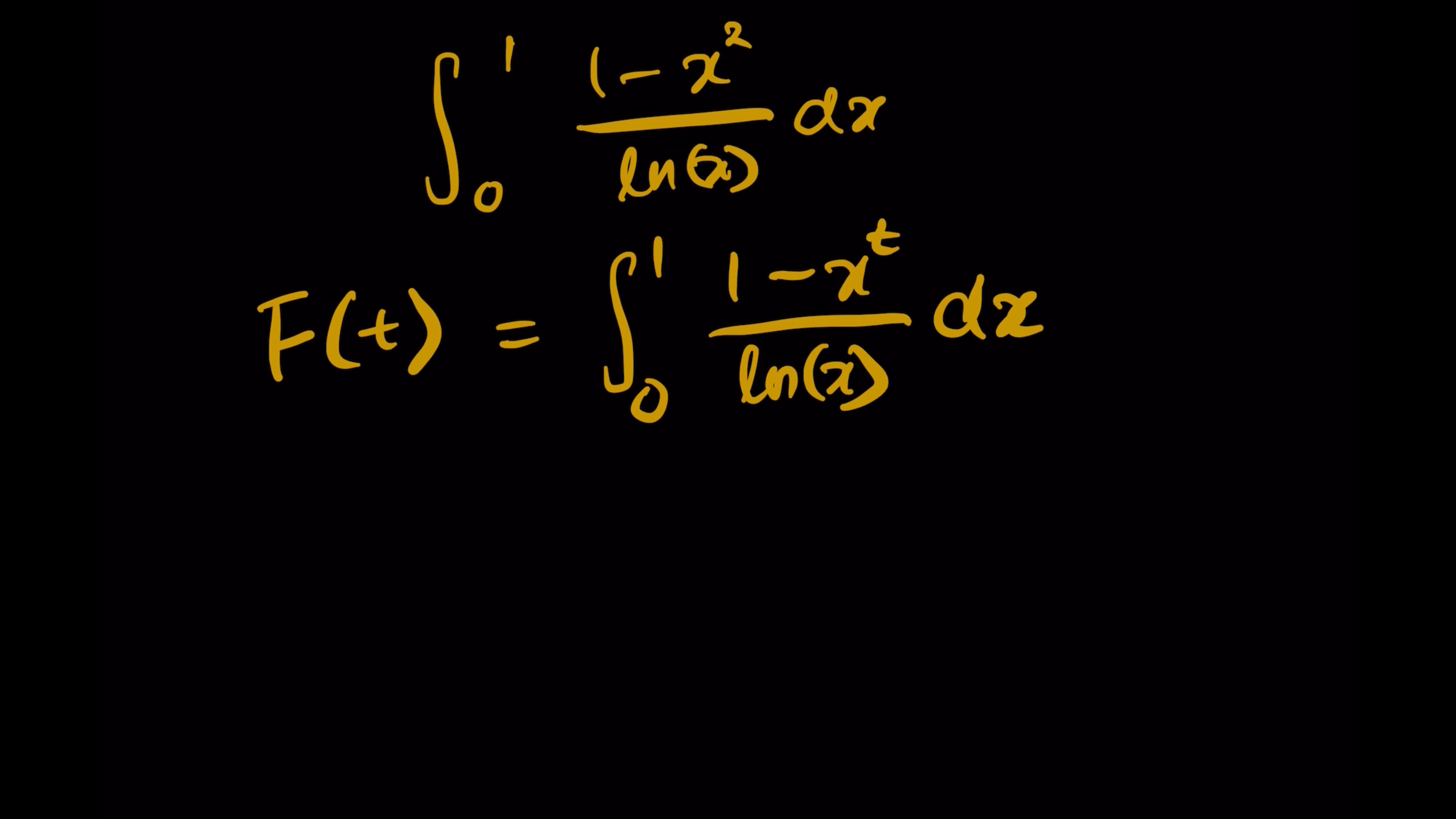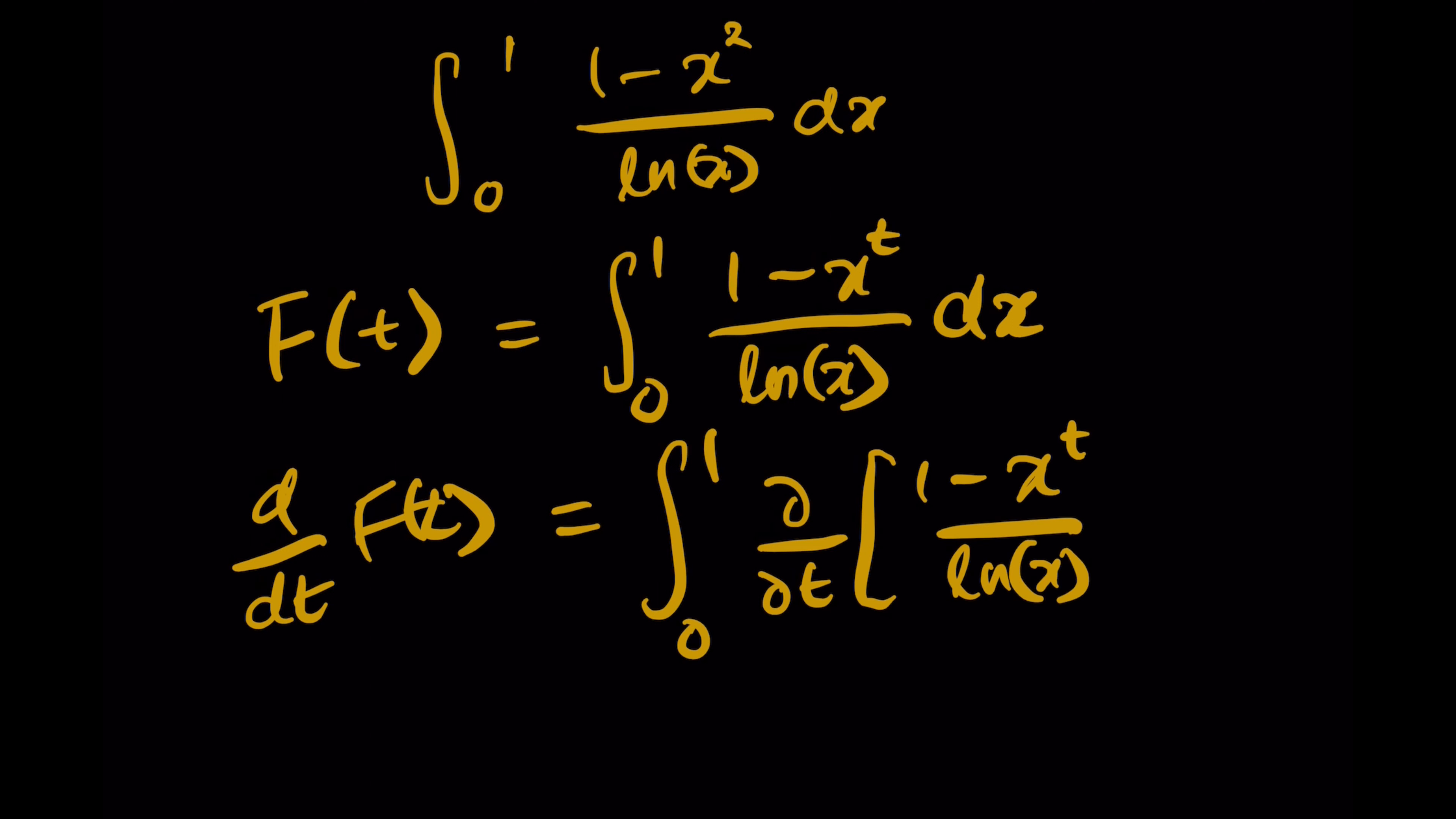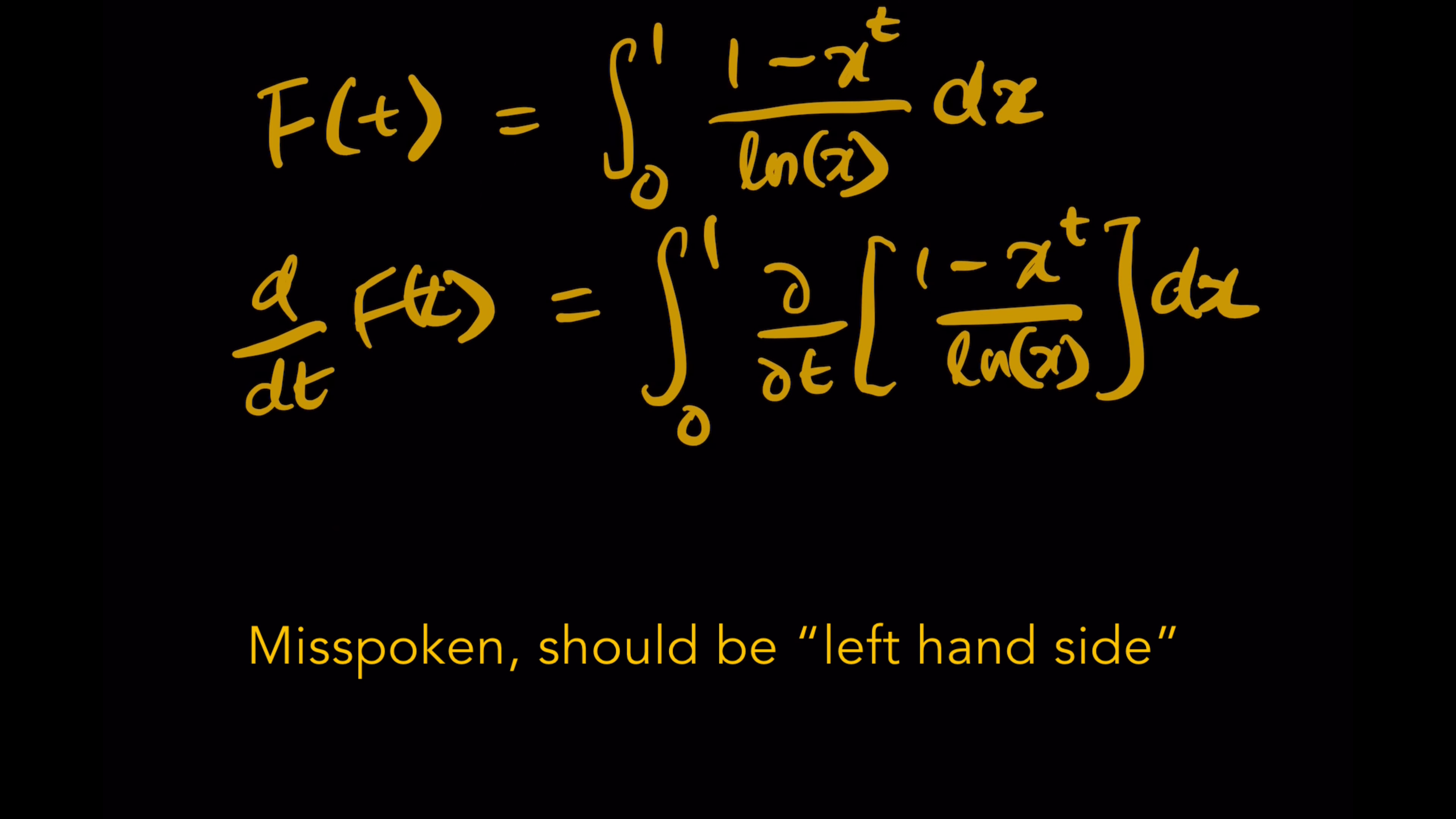Then we take differentiation of both sides. On the right hand side, because this is a partial derivative with respect to dt, we use the del symbol rather than d, but it is the same operation. So on the right hand side it becomes F'(t).